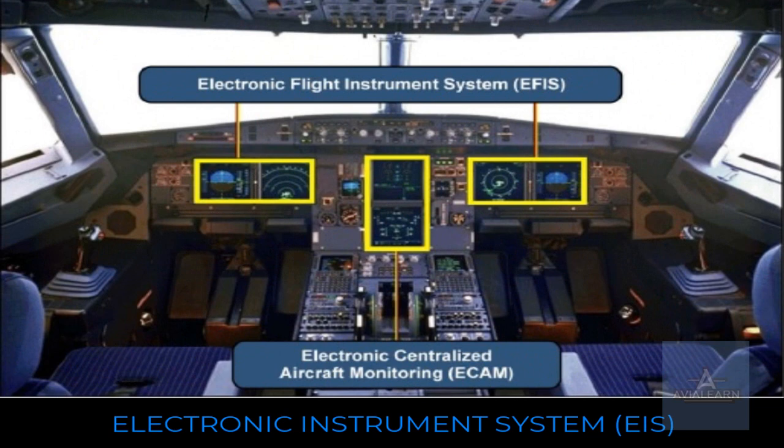Indicating and Recording System — Electronic Instrument System. The single aisle aircraft cockpit instrumentation information is displayed on six display units. These display units are part of the Electronic Instrument System, EIS. The EIS is separated into two subsystems: the Electronic Flight Instrument System, EFES, and the Electronic Centralized Aircraft Monitoring, EECOM.